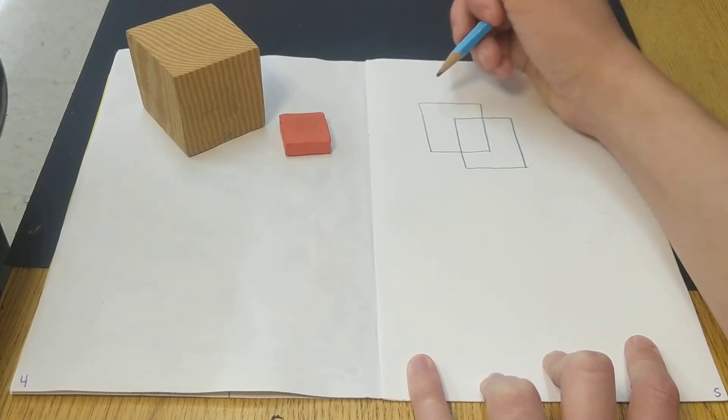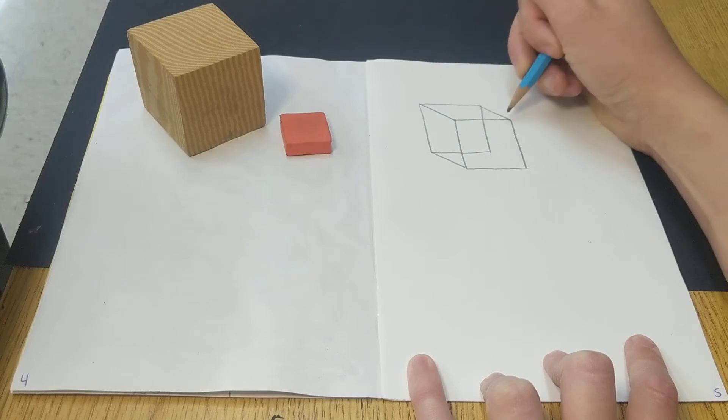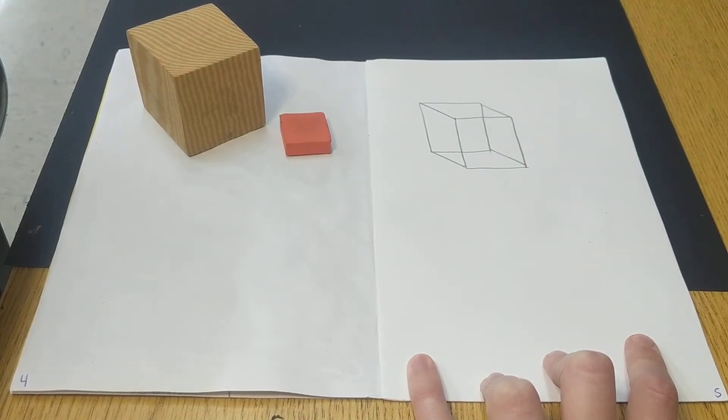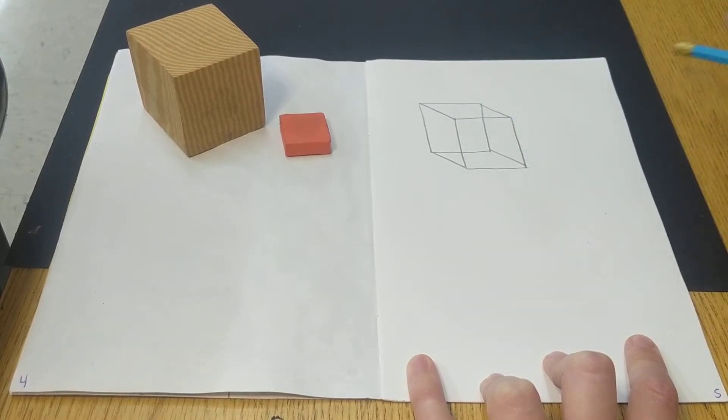And what we do is we connect each corner with a diagonal line like this. And that shows you that you have all that space, all that volume, inside of your cube.